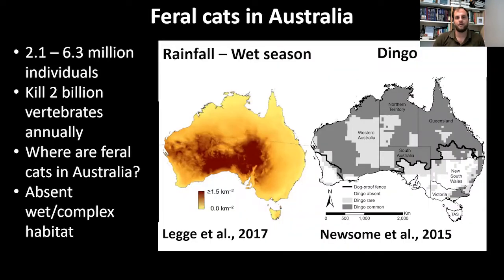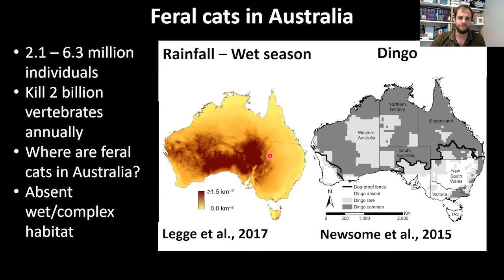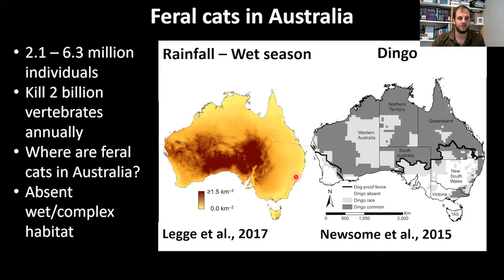This raises the question: where are feral cats in Australia? Two main theories drive this. First, Legge et al. propose that rainfall is the big driver, with high-density areas in arid parts and wetter areas being unsuitable. Second, dingoes may exclude or reduce feral cats from habitats. Both theories suggest feral cats should be absent in wet, complex environments such as tropical rainforest.